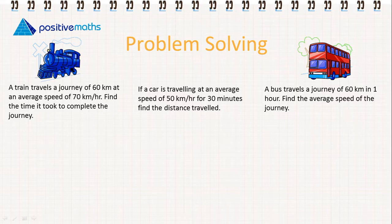Our first example, we have a train travels a journey of 60 kilometres at an average speed of 70 kilometres per hour. We need to find the time it took to complete the journey. So the first thing we're going to do is highlight the key pieces of information. It travels 60 kilometres, so that's our distance, at an average speed of 70 kilometres per hour.